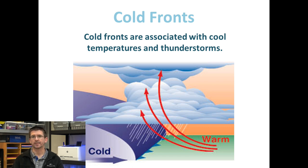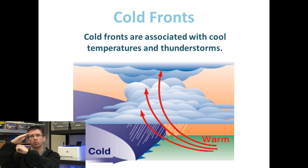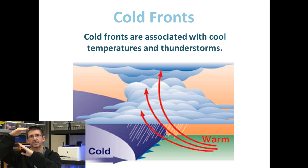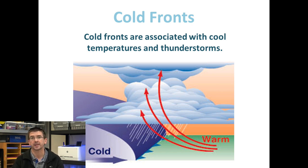Because warm air tends to rise up, in this case instead of gently going up above like the warm front, the cold air actually pushes the warm air out of the way and forces it up quickly. Because of this, we tend to get rapidly cooling temperatures as well as severe rain and often thunderstorms from cold fronts.